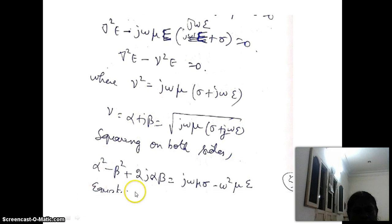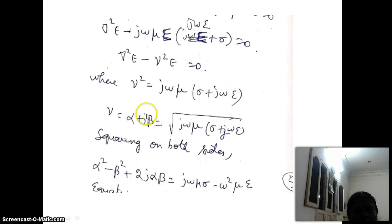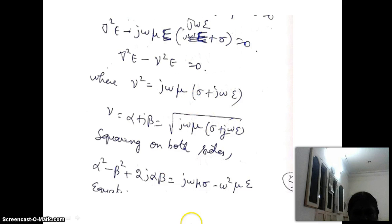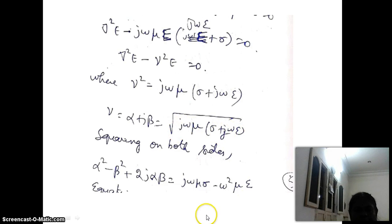To remove the square root, we square both sides: (alpha plus j beta) squared. Using the expansion (a plus b) squared equals a squared plus b squared plus 2ab, we get: alpha squared minus beta squared plus 2j alpha beta equals j omega mu times sigma minus omega squared mu epsilon. This is obtained by multiplying out the right-hand side: j omega mu times sigma gives j omega mu sigma, and j omega mu times j omega epsilon gives minus omega squared mu epsilon.